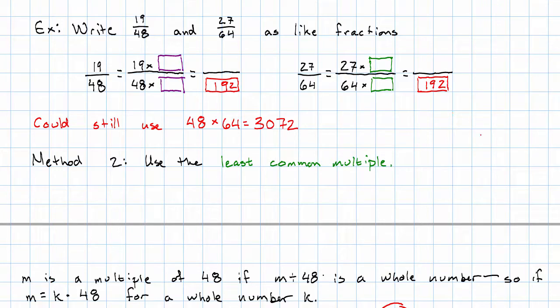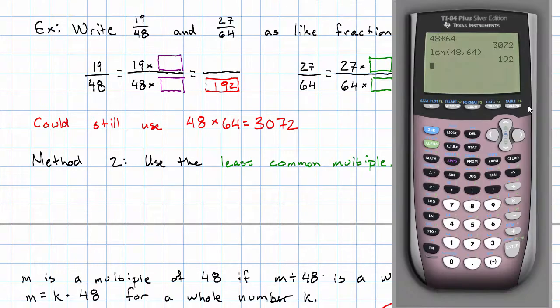Okay, how do we use that? Well, what did we need to multiply 48 by to get 192? That was 4. We'll need to multiply the numerator by the same thing. We'll have 76, 192nds.